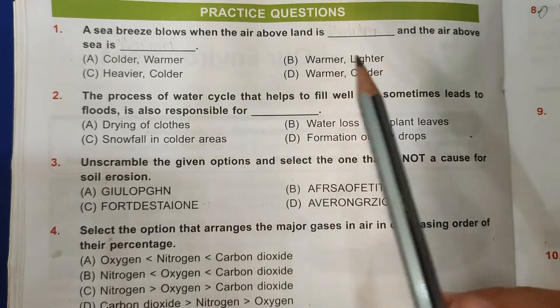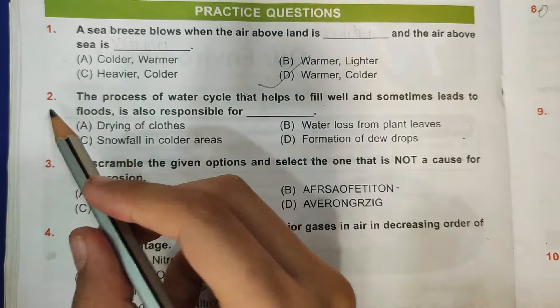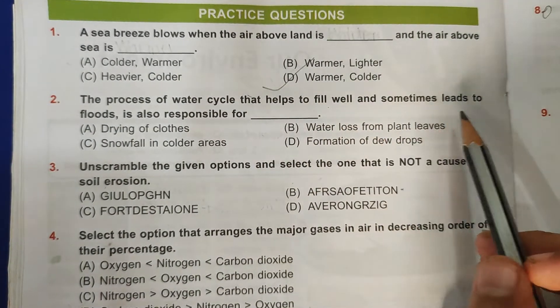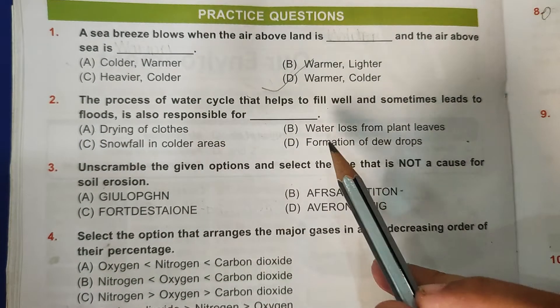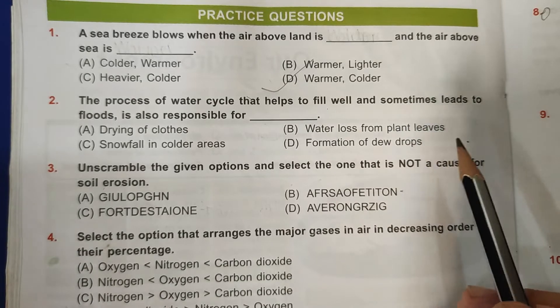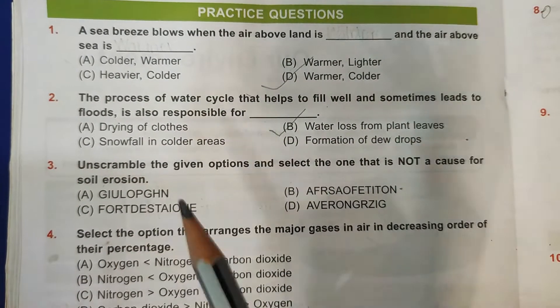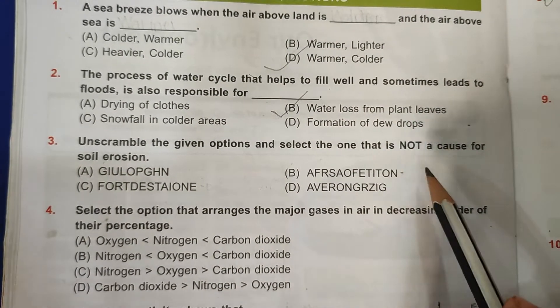So a sea breeze blows when the air above land is warmer and the air above sea is colder, so this is the correct answer. Then second question: The process of water cycle that helps to fill well and sometimes leads to floods is also responsible for water loss from plant leaves, so this is the correct answer.